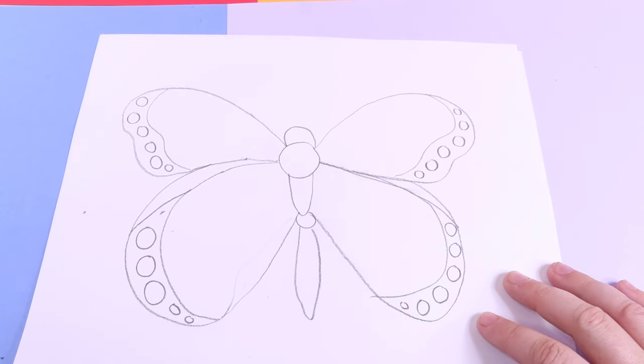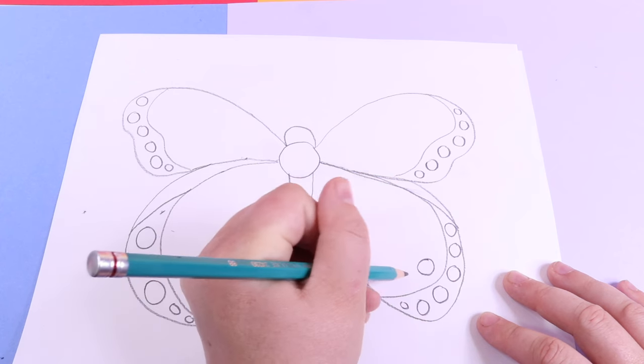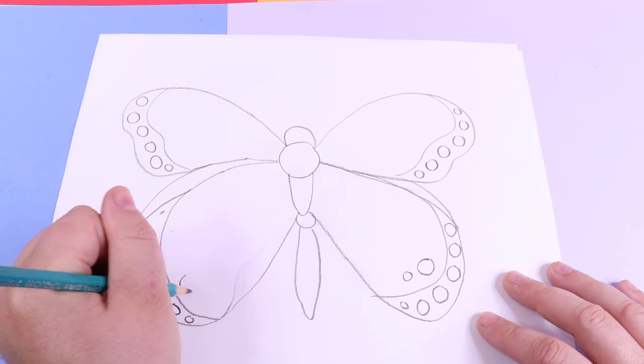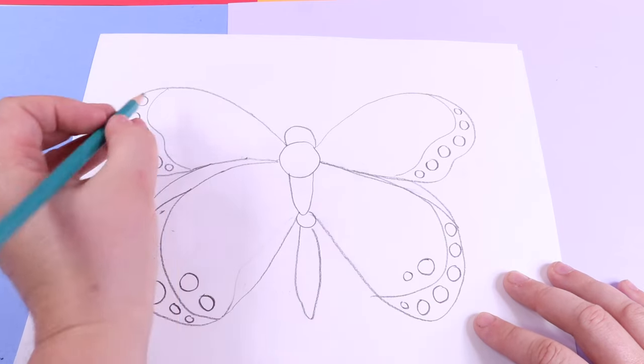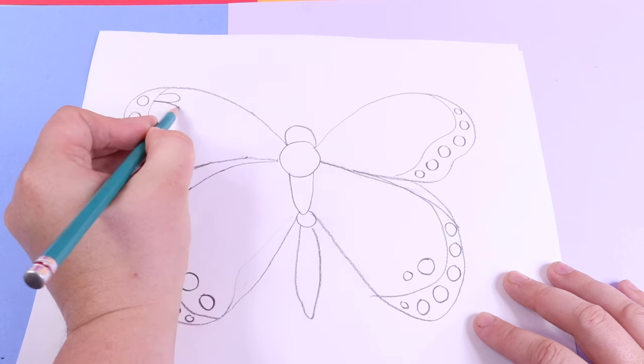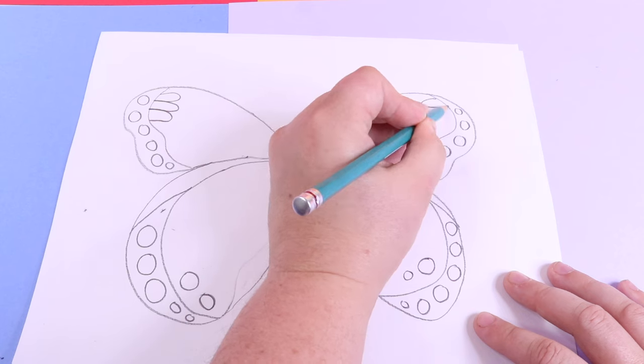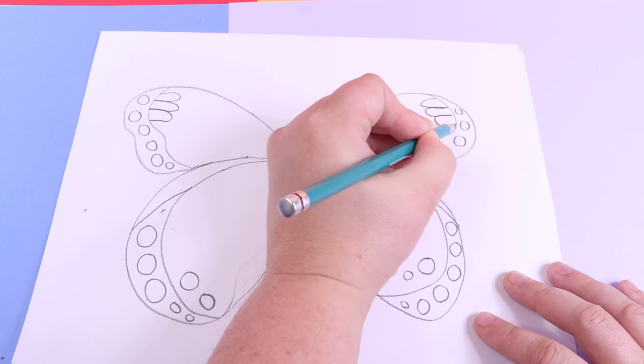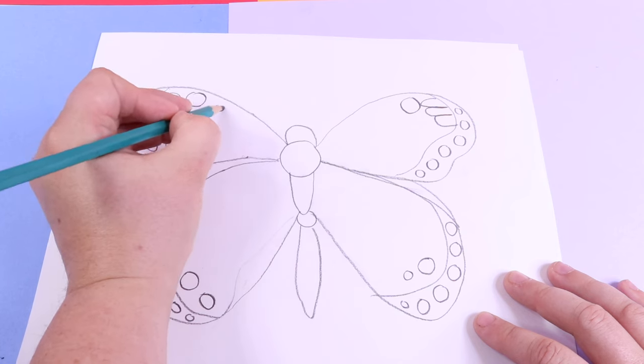This butterfly is starting to look like something. Let's add some more dots. Two on the bottom on each side, but this time on the inside of the line. Some little floof that look like beans growing out of the wall on each side on the top wing. And a big circle. Adding a little circle.